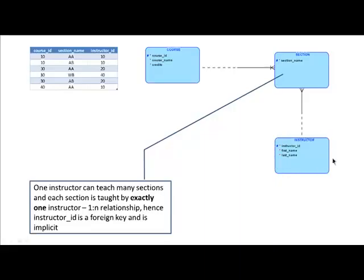You've got the instructor entity type. This diagram says every instructor may teach many courses or maybe not teach any course — that's what the dashed line indicates. But a section must always be taught by an instructor, shown with a solid line. Because an instructor can teach many sections, you've got the crowfoot. We are not showing the instructor ID as a foreign key even though it's in the table, because this is a one-to-many relationship, and we know automatically that we will represent the relationship by adding the primary key of instructor as an attribute in the section entity type.